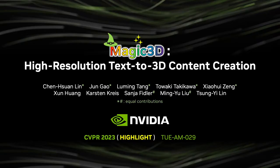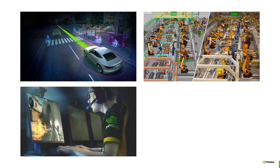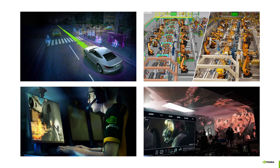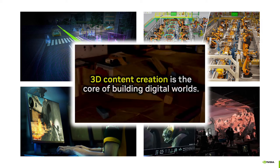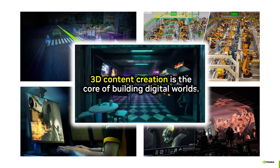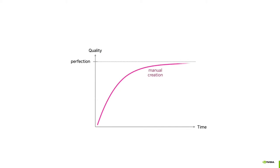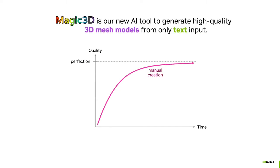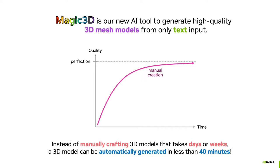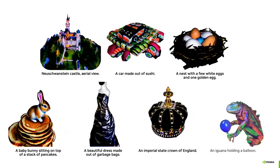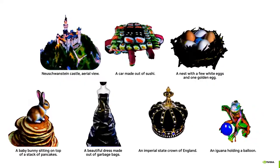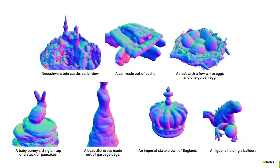We present Magic 3D, High-Resolution Text-to-3D Content Creation from NVIDIA. Industries including autonomous vehicles, robotic factories, game designing, and movie production all involve creating virtual digital worlds. 3D content creation plays a crucial role in these applications. However, 3D content creation is typically a laborious process and requires professional software and skills to reach perfection. Magic 3D can generate high-quality 3D mesh models from text inputs. Our goal is to turbocharge 3D content creation to reduce the time and effort required. Magic 3D can understand the input text and create 3D mesh models according to text descriptions, like a bunny sitting on top of pancakes. The 3D images also include detailed geometry like the skin of the iguana.